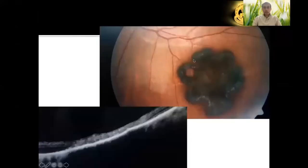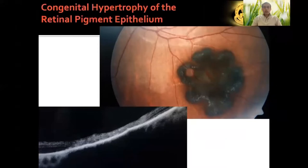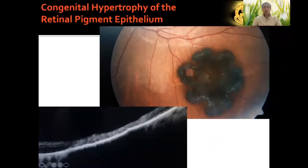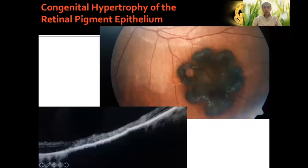A heavily pigmented lesion with well-defined borders and hemorrhages is also not a choroiditis patch — it is congenital hypertrophy of the retinal pigment epithelium. The surrounding retina and choroid are healthy and silent, unlike active inflammation which would have diffuse, merging borders suggesting spreading activity. In this case the hemorrhages were due to a small branch retinal vein occlusion overlying the lesion. This is not uveitis.